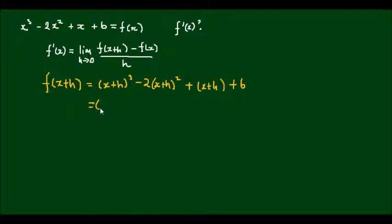And if I expand these terms, I'll get, for the first term, I'll get x cubed plus 3x squared h plus 3xh squared plus h cubed minus 2. I'll leave that outside first, so I'll expand the squared term, so I'll get x squared plus 2xh plus h squared plus x plus h plus 6.